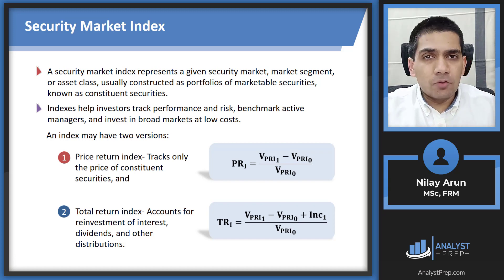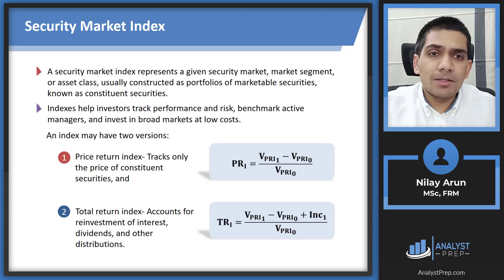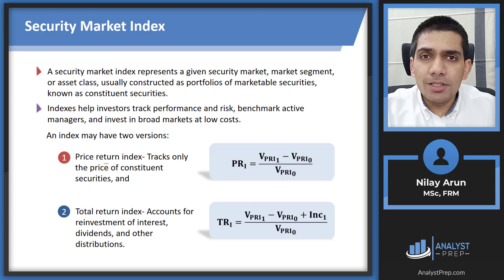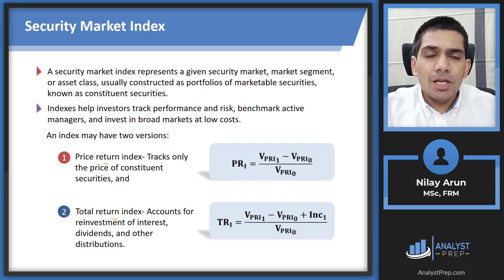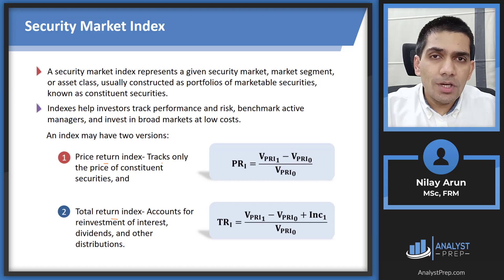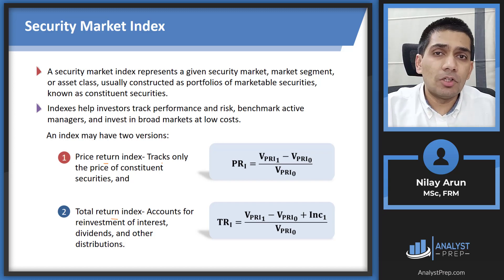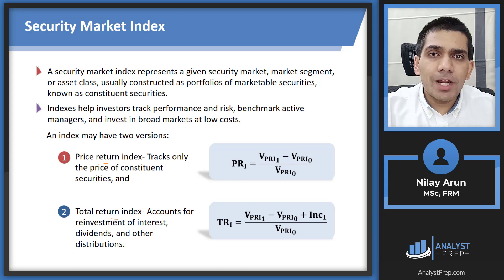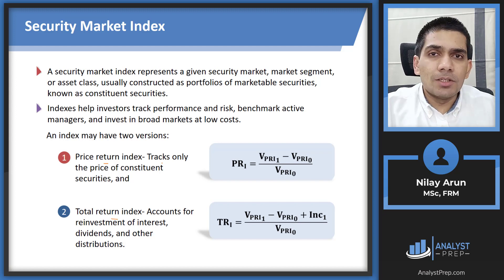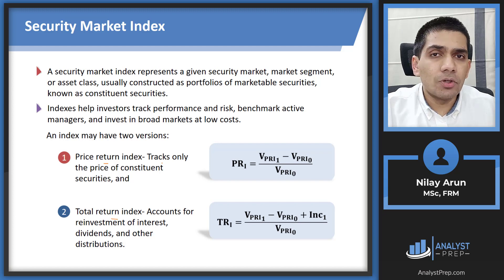An index may have two different versions. We could have a price return index, which is the one we mainly deal with, or a total return index. A price return index tracks only the prices of the constituent securities. Whereas a total return index, in addition to prices, also tracks any income or distributions — such as dividends or reinvestment of interest.